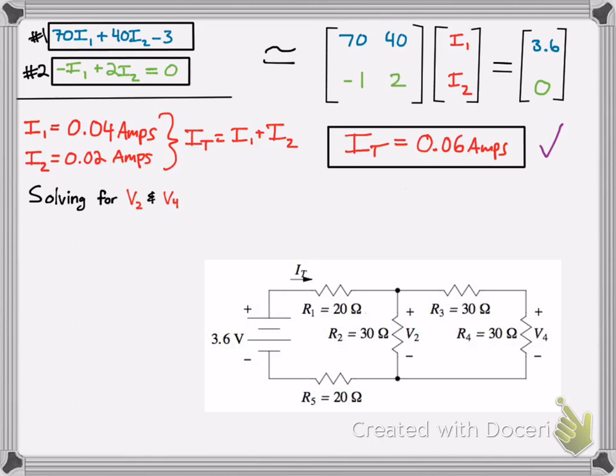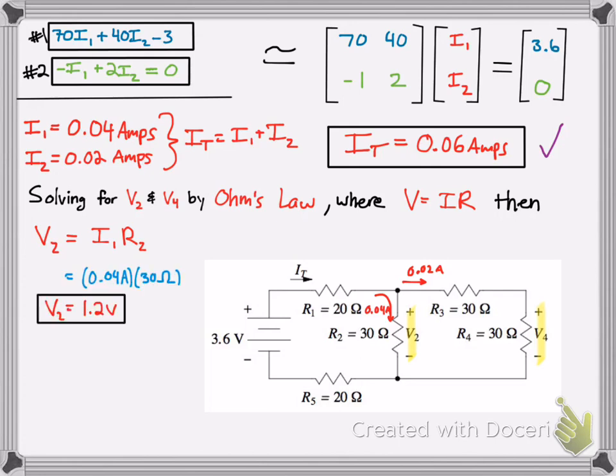Now we're supposed to be looking for V2 and V4. So remember, we can do that by using Ohm's law, which is V equals IR. And then we can show from the numbers that we have, we have our I1 down there and our I2. And then we're looking for the voltage drop across those resistors there, which I highlighted below. So remember V2, what do we got going through? We got I1, which is at 0.04 amps, times R2, which is the 30 ohms. And then boom, we get V2, 1.2 volts.